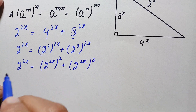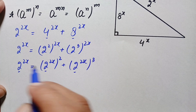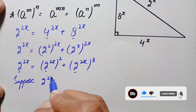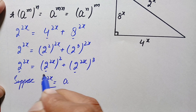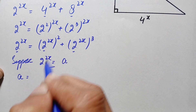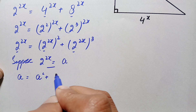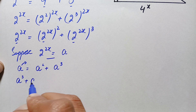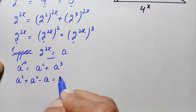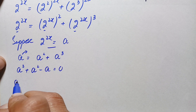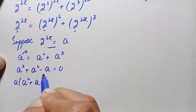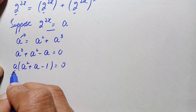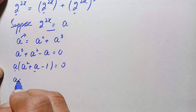Since the base 2^(2x) appears throughout, let us suppose a = 2^(2x). Substituting, the equation becomes a = a² + a³. Bringing a to the right-hand side gives a³ + a² − a = 0. Taking a as a common factor, this becomes a(a² + a − 1) = 0. So either a = 0 or a² + a − 1 = 0.